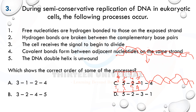The nucleotides form hydrogen bonds with their complementary bases — G-C form triple hydrogen bonds, A-T form double hydrogen bonds. Once nucleotides are bonded to their complementary bases by hydrogen bonds, DNA polymerase forms phosphodiester bonds linking the nucleotides together to form a new length of DNA. So the first thing that happens is the DNA double helix unwinds — that is step 5 in the options.